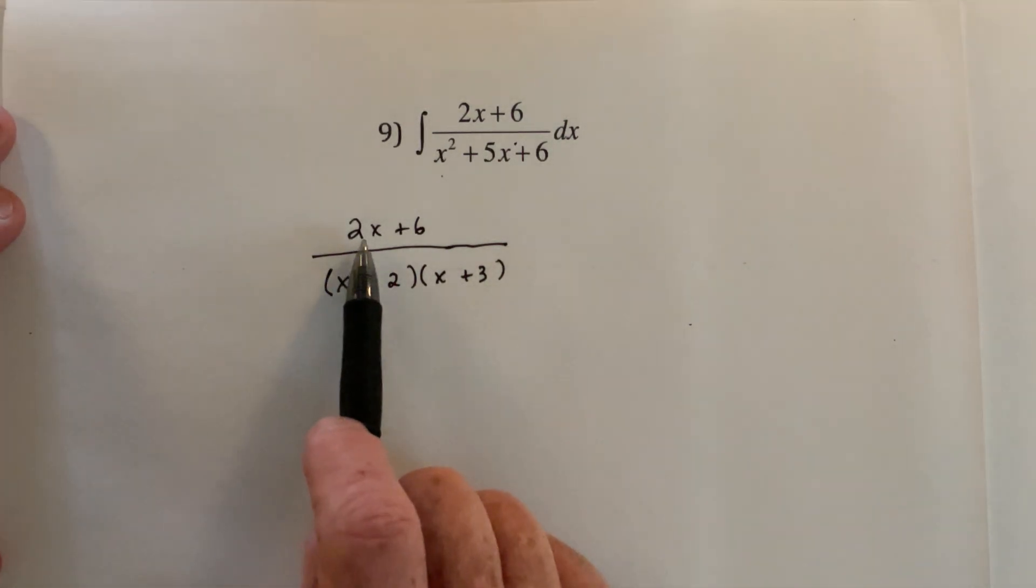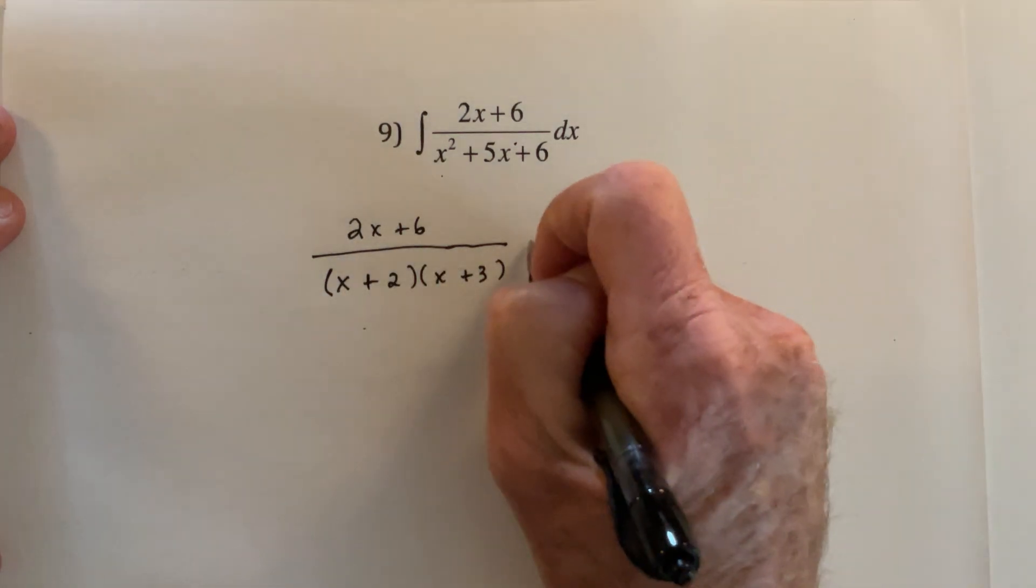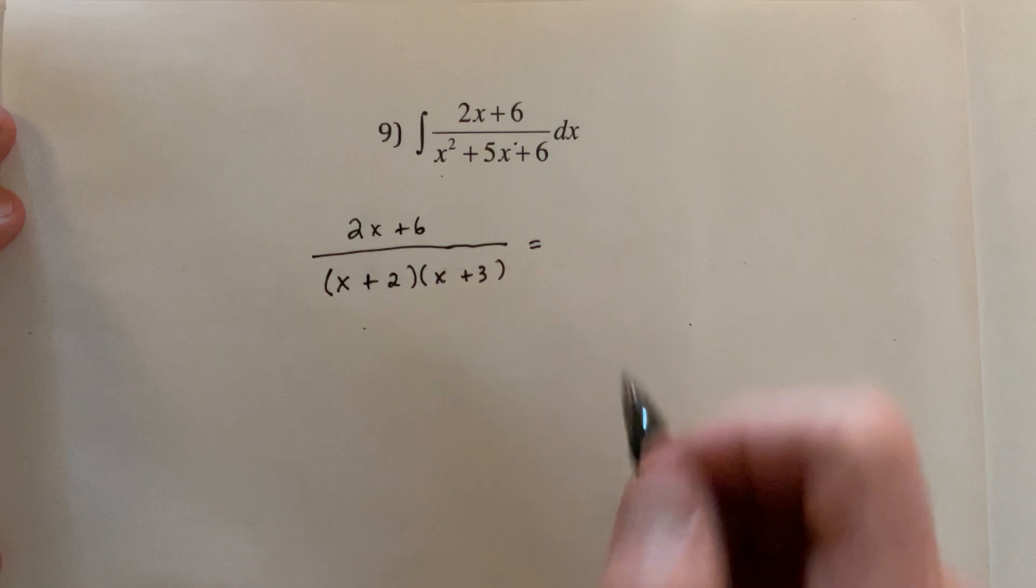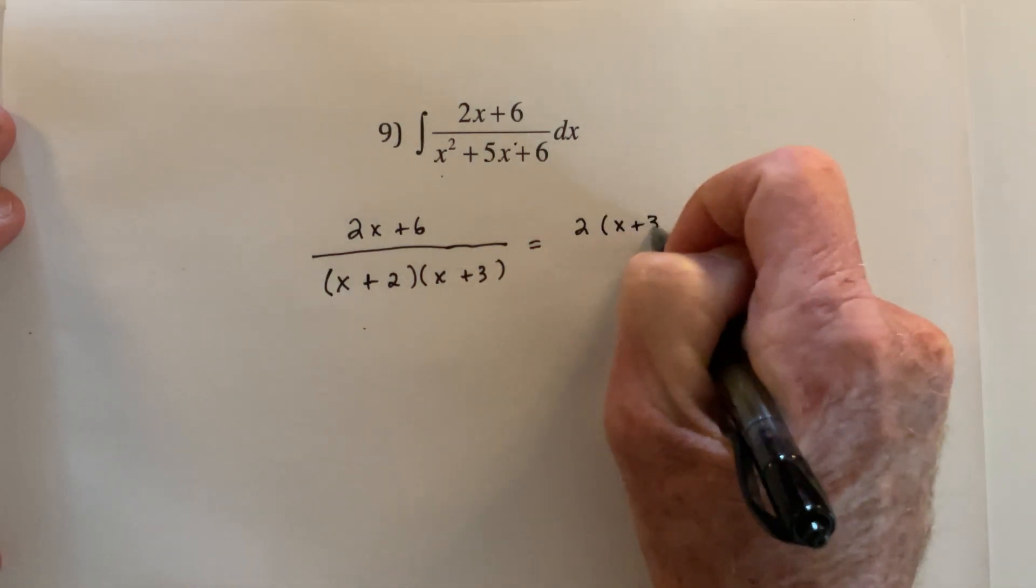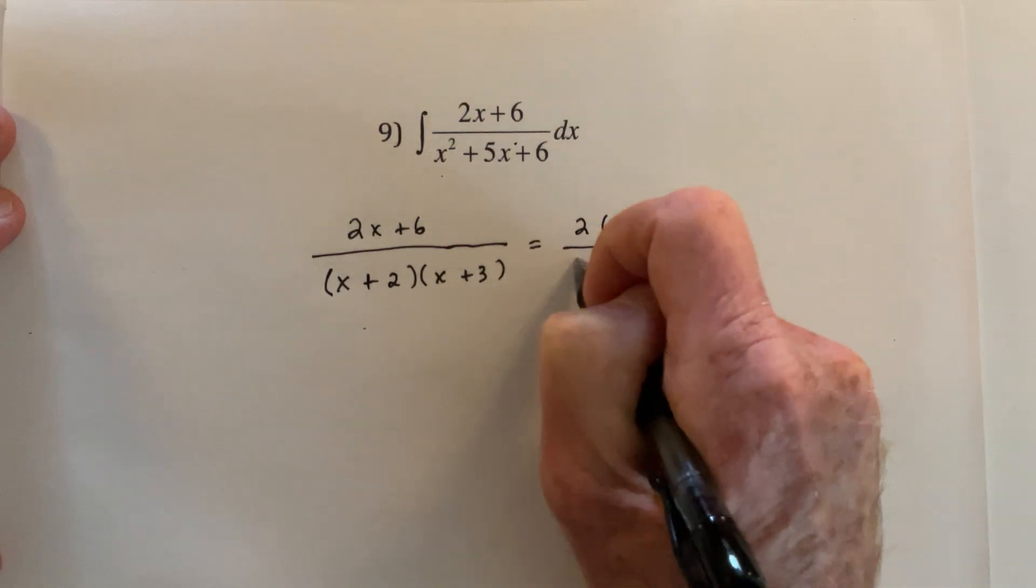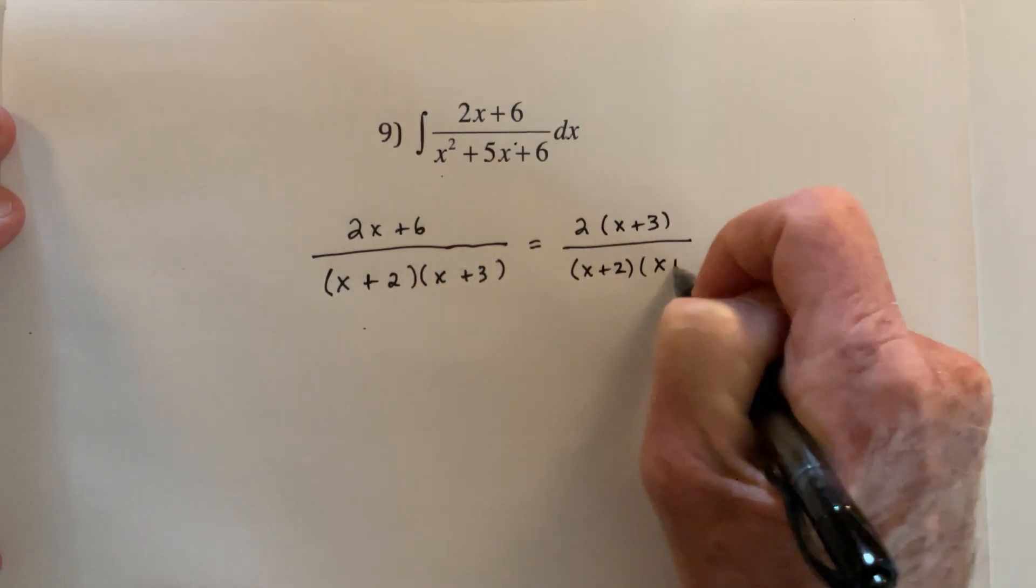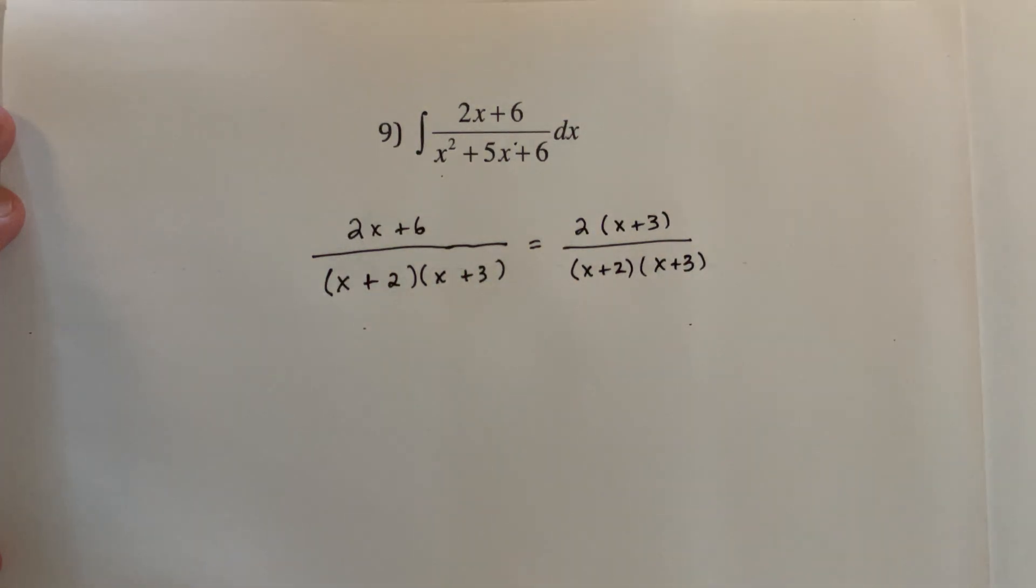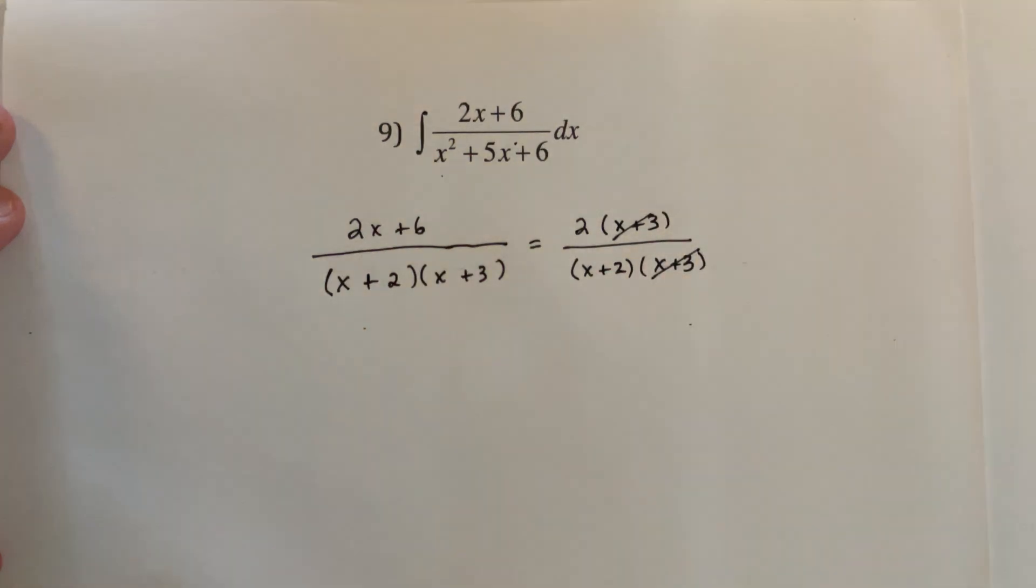And then I notice that this one is 2x plus 6, so I could actually factor out a 2 on that one. With partial fractions this usually doesn't happen, but it just so happens that there's an x plus 3 on the top and the bottom, so I can make my life simpler by having those cancel.